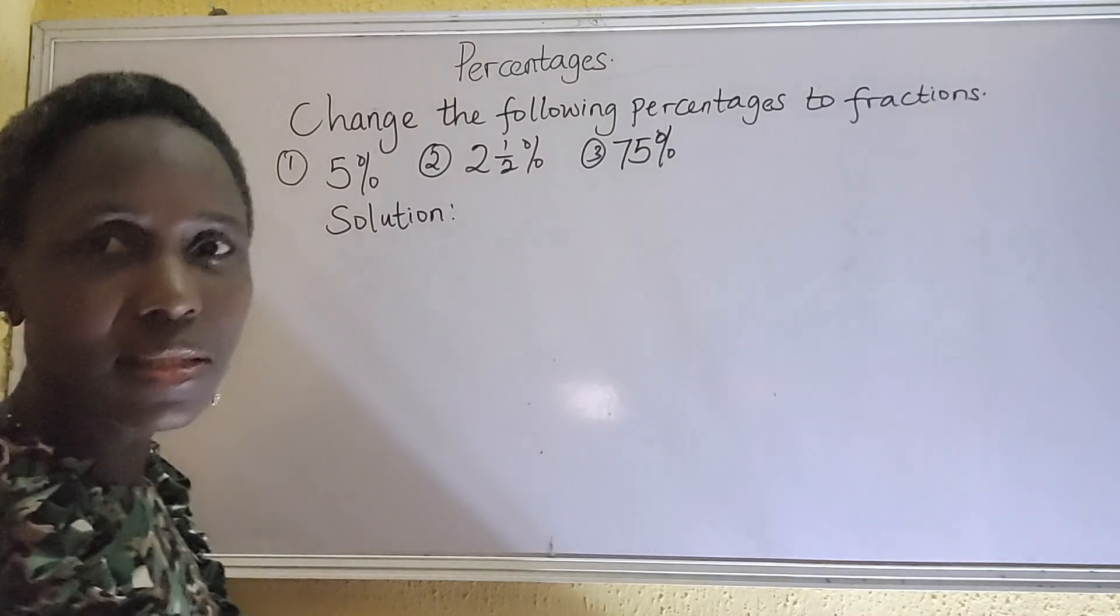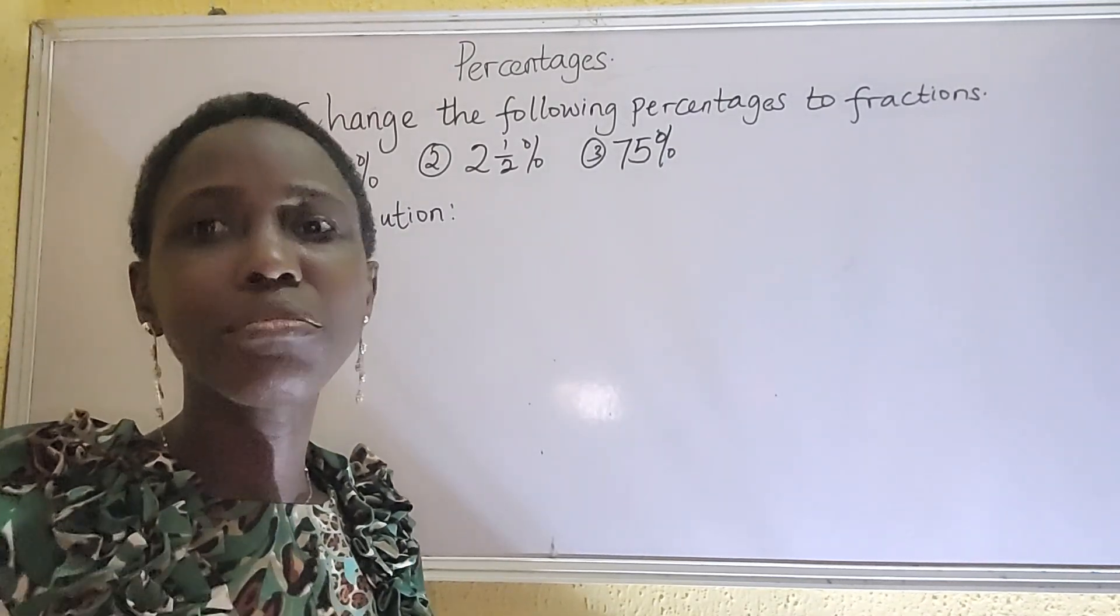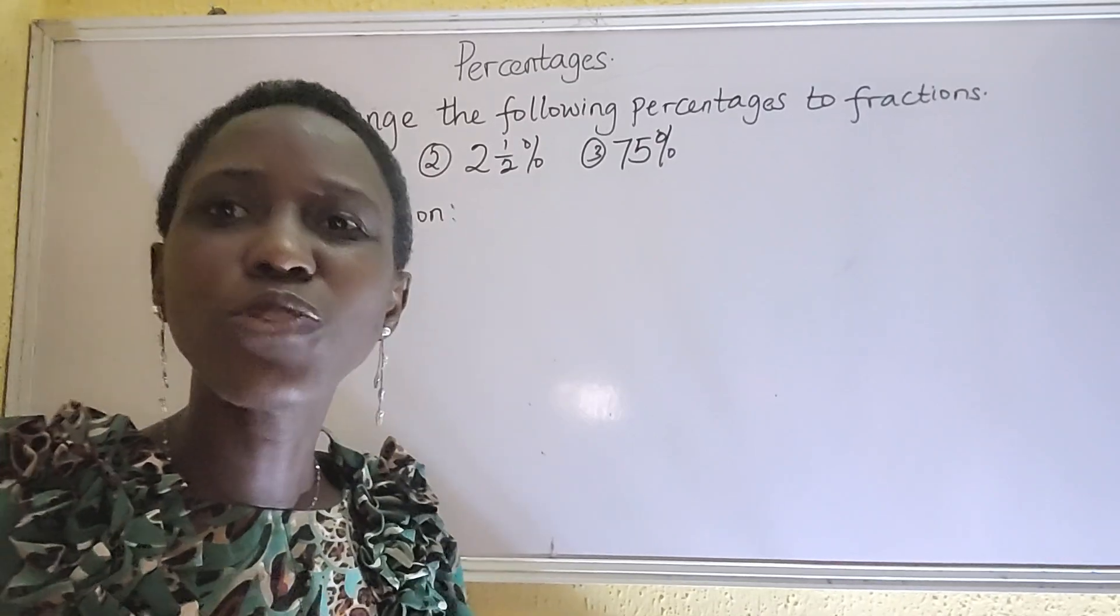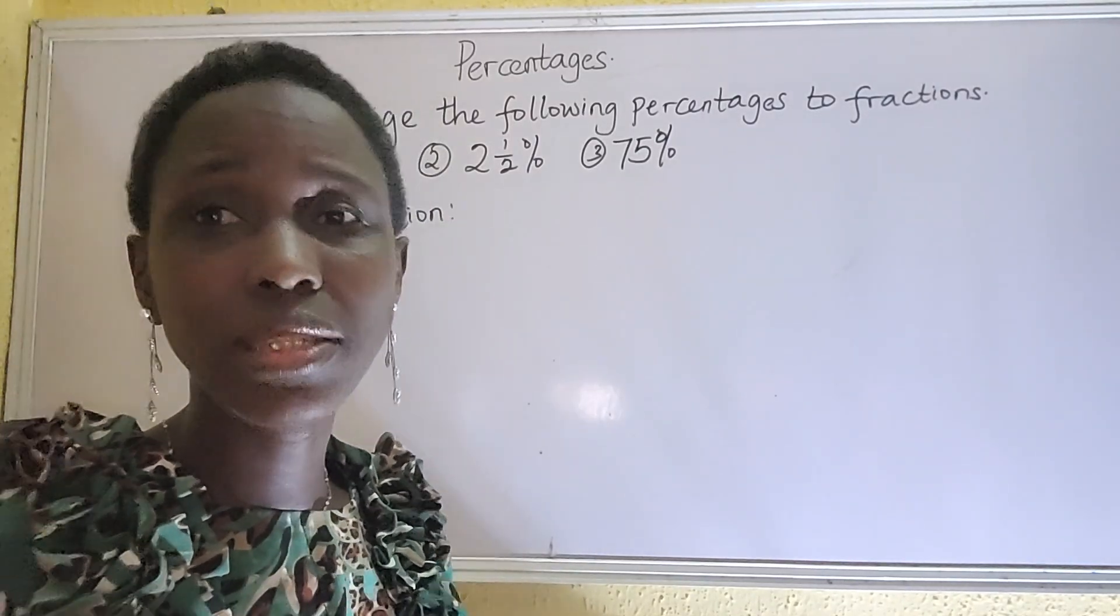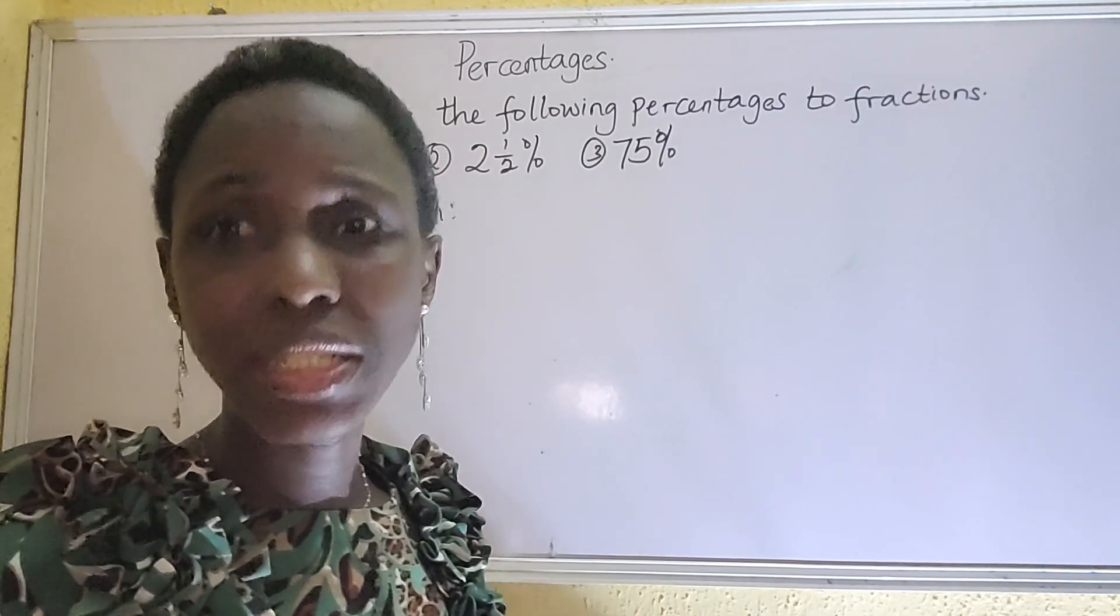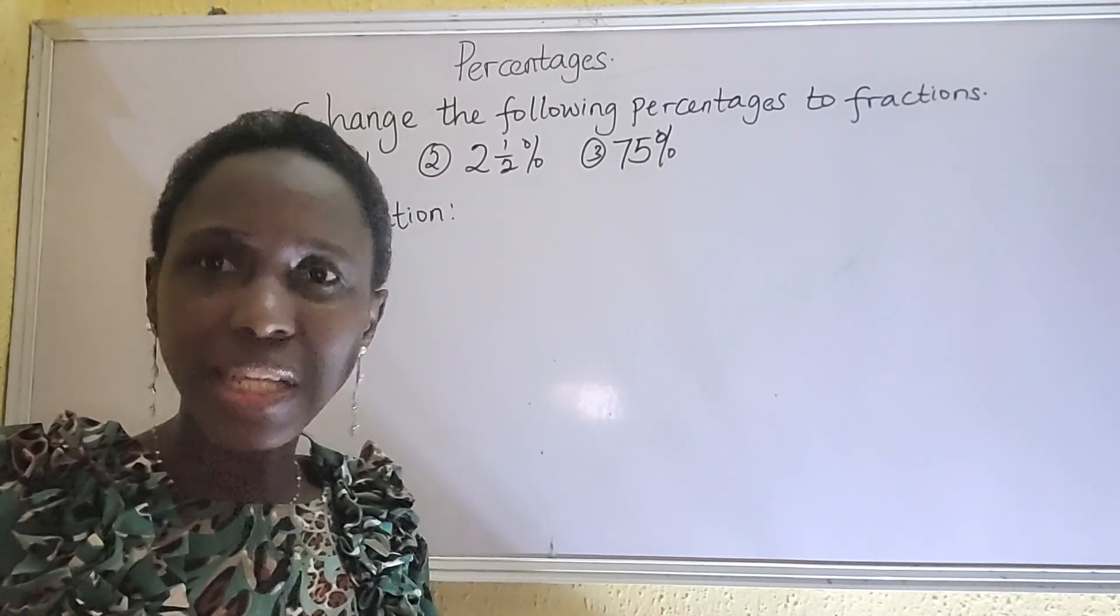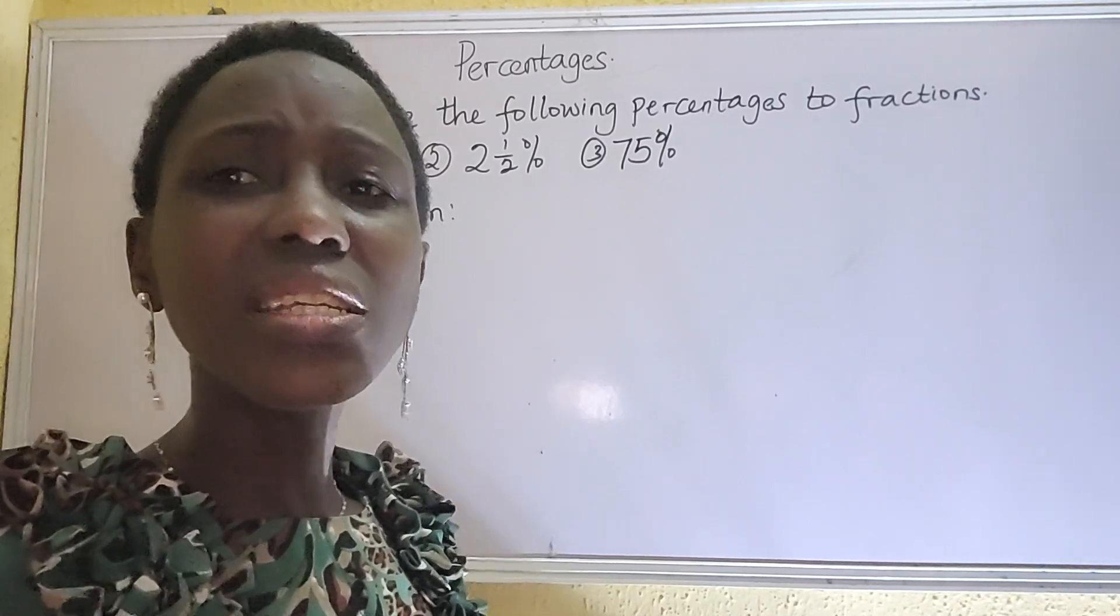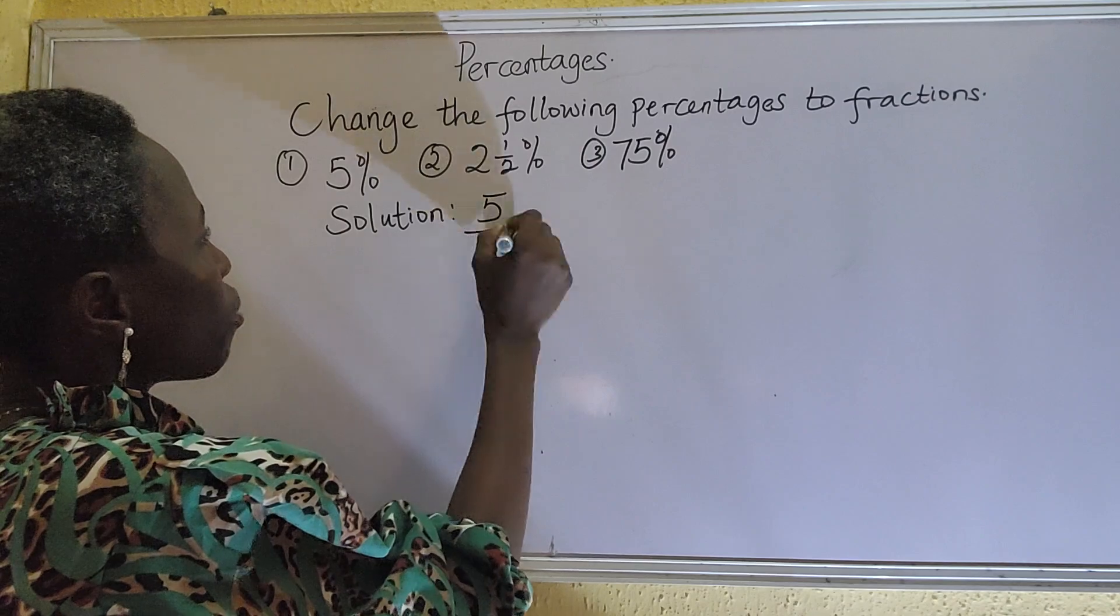In solving this, since we said when you have 5% or anything percent, it means that particular number over 100. If I say 100, 100, 100, anytime you hear any number in percentage it means that number is over 100. So 5% is going to be 5 over 100.